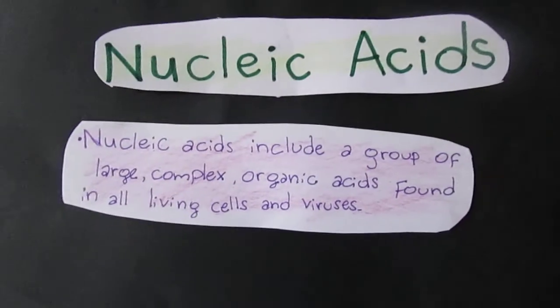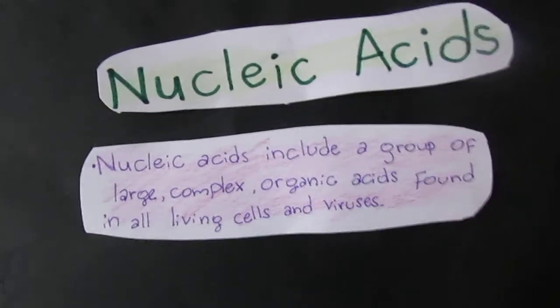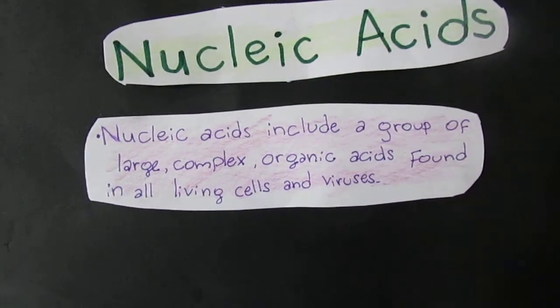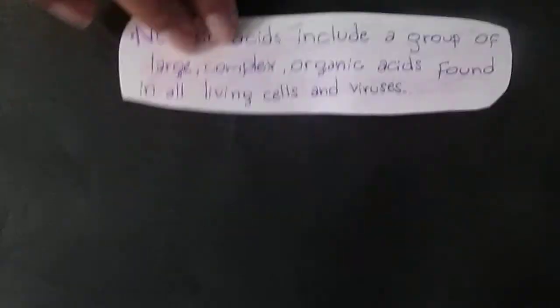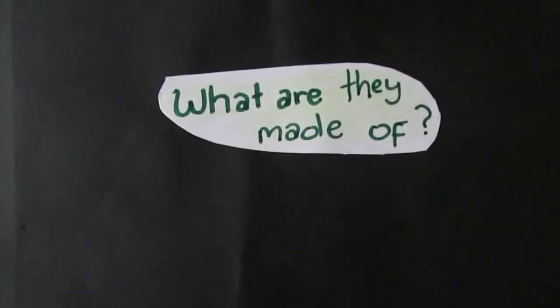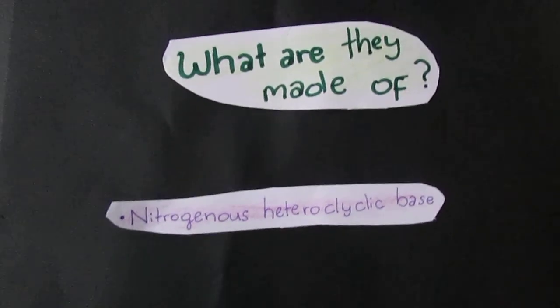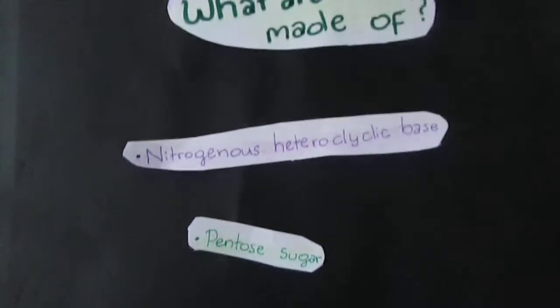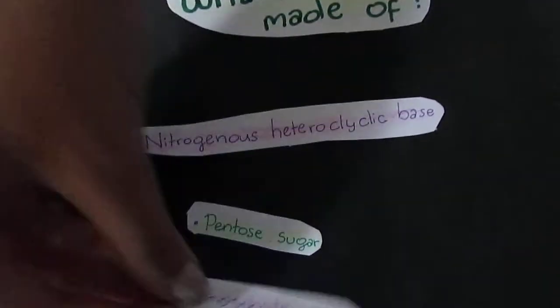Now we're going to talk about nucleic acids. Nucleic acids include a group of large complex organic acids. They are found in all living cells and viruses, they're practically everywhere. What are they made of? They have nitrogenous heterocyclic base, they have pentose sugar, and they have phosphate group.